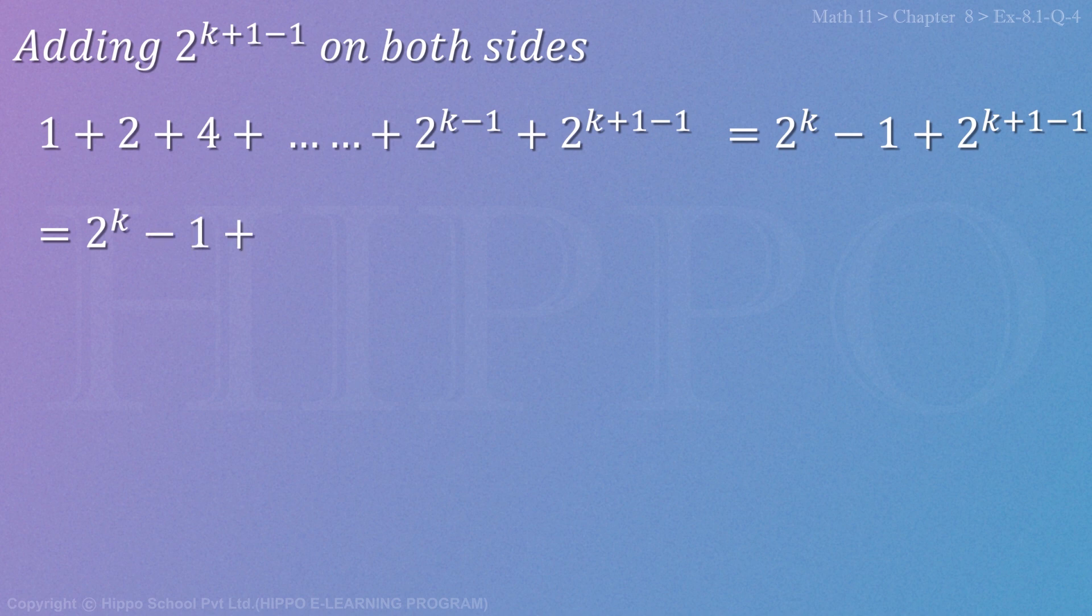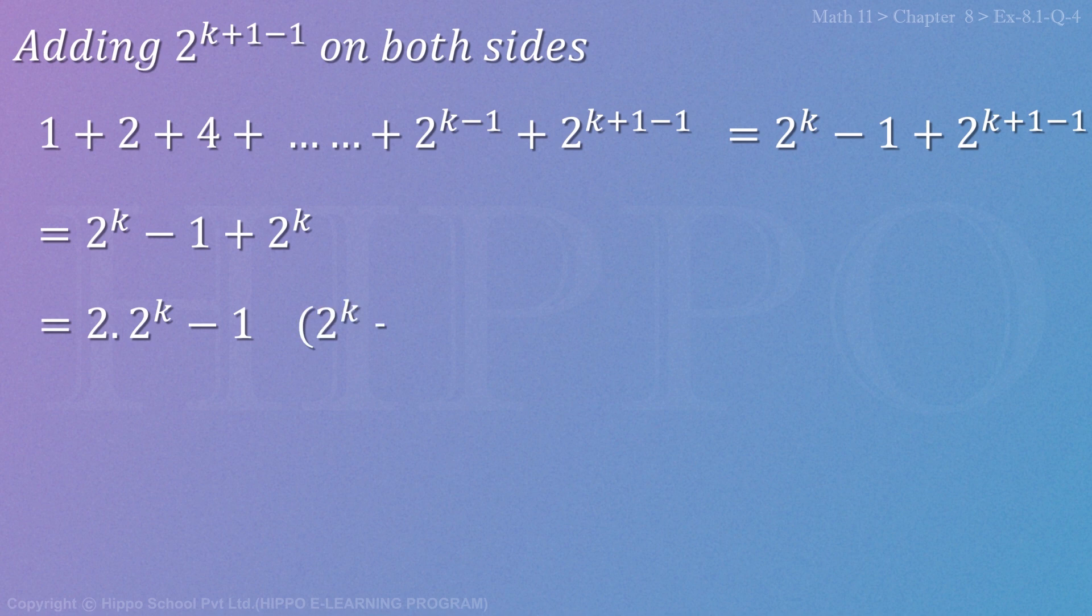In the power, plus 1 minus 1 cancels, leaving 2^k. So we have 2^k - 1 + 2^k. This equals 2 × 2^(k-1) because 2^k + 2^k = 2 × 2^k, which equals 2^(k+1). When two numbers are multiplied, their powers add, so 2^1 × 2^k = 2^(k+1).